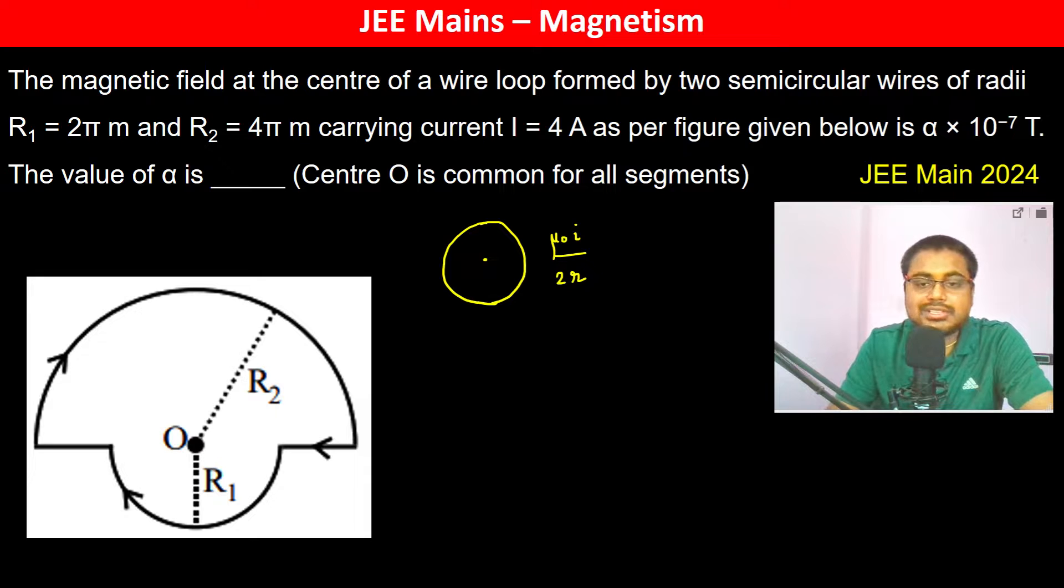So therefore for a semicircular it's going to be mu_0 i divided by 4 into r. So now the magnetic field in the center formed by two semi of radius r1 and r2.